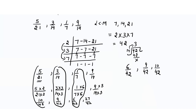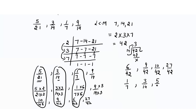The last fraction is 27/42. Since we need the answer in original fractions: 6/42 = 1/7, 9/42 = 3/14, 10/42 = 5/21, and 27/42 = 9/14. I've made circles to help you match each converted fraction back to its original.